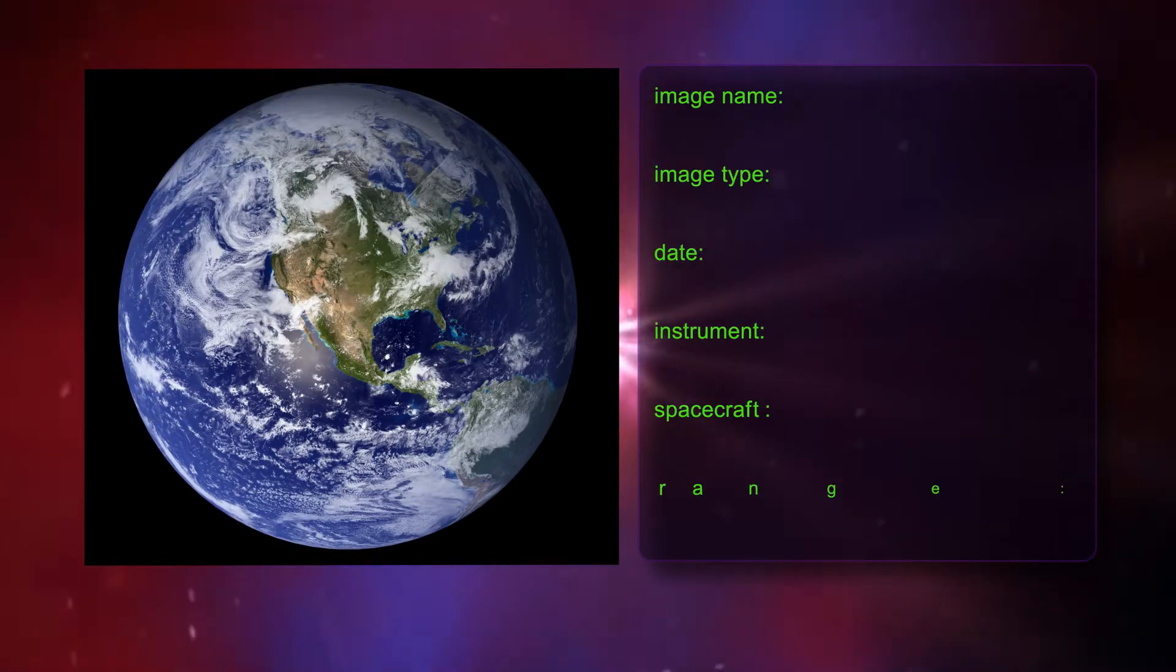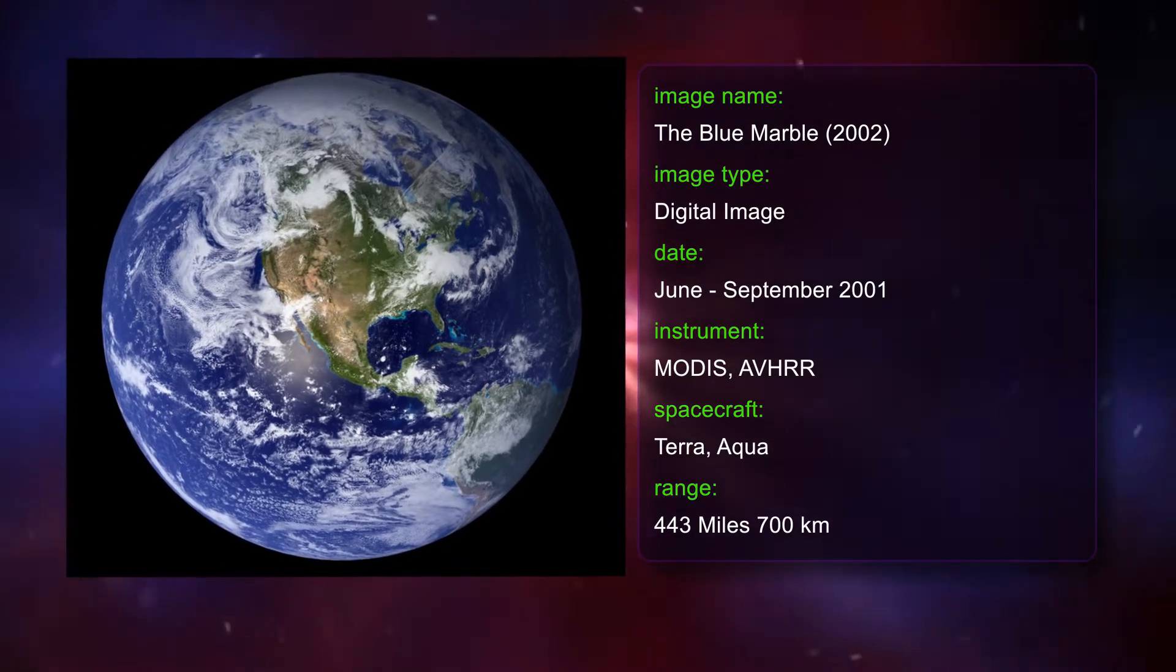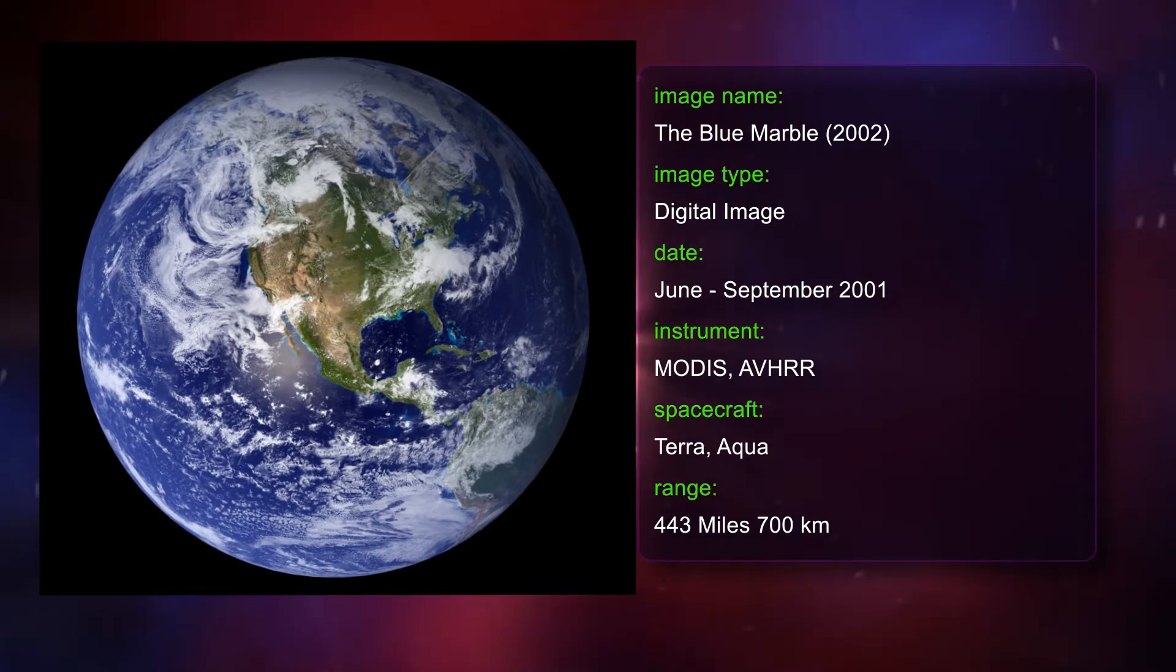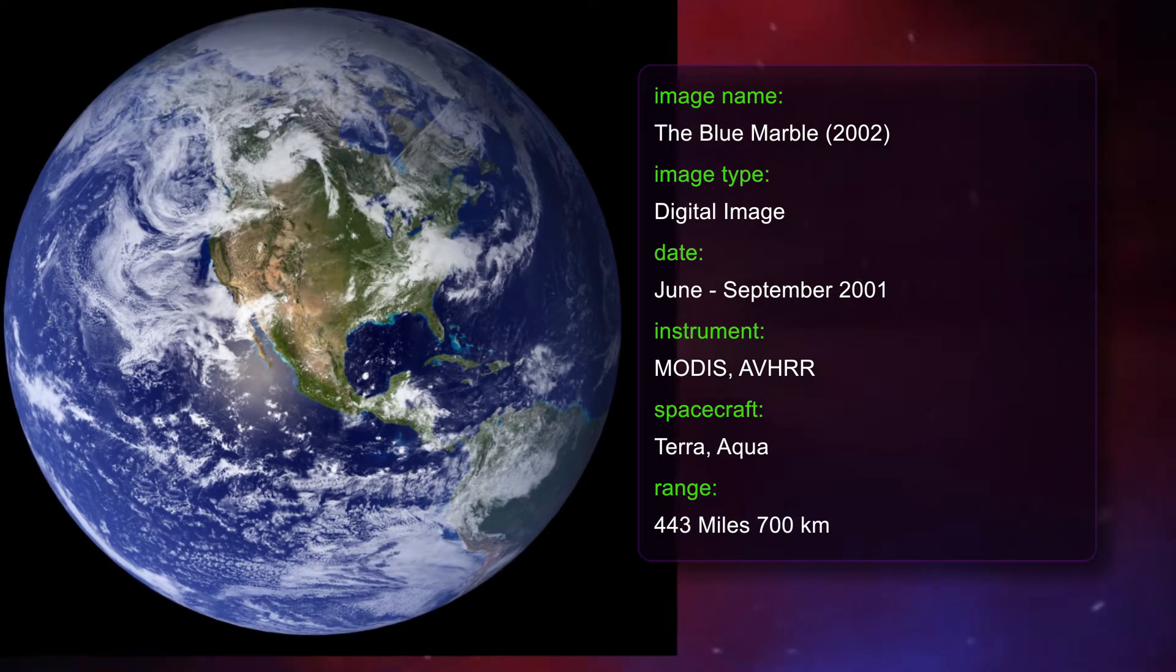In 2002 this new Blue Marble image was released. Much of the information contained in this image came from a single remote sensing device called MODIS flying over 700 kilometers above the Earth on board the Terra satellite.